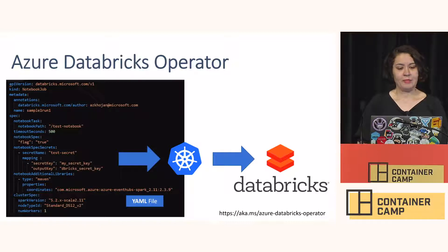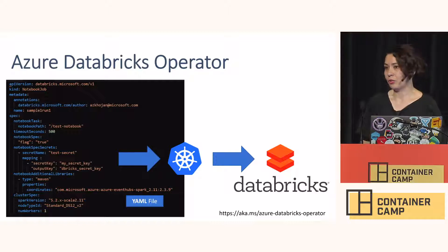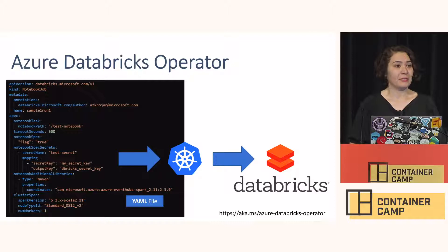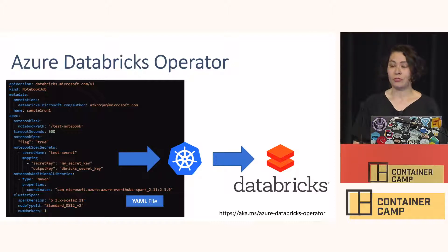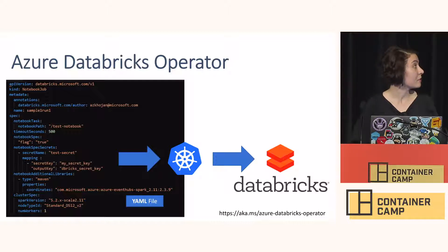For example, where the notebook is, whether we need to provide a timeout, what the cluster spec is — how many worker nodes we want — and what information from Kubernetes secrets we want to pass to the Databricks notebook. For example, connection strings are the information you save as Kubernetes secrets.